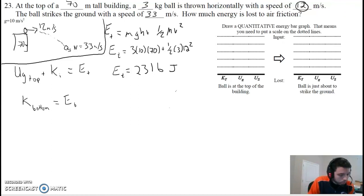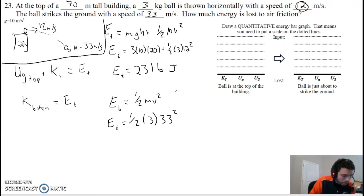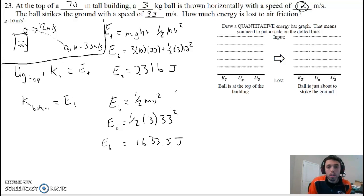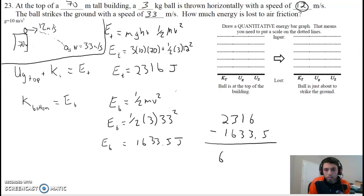What about at the bottom? At the bottom, all we have is kinetic energy — one-half mv squared. Mass was 3, velocity is 33 meters a second, squaring that, and we get 1,633.5 joules. There's clearly a discrepancy — they're not equal. The loss of energy is because of friction slowing our object down and making sound and heat with air. So the difference in energy: 2,316 minus 1,633.5 gives us 682.5 joules — that's how much energy we lost because of friction.